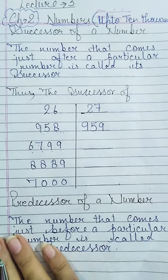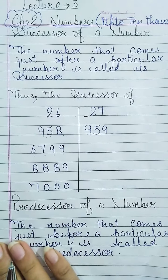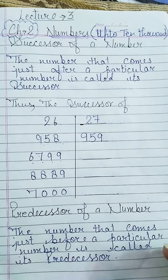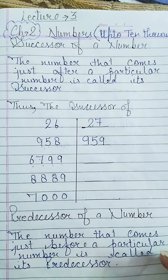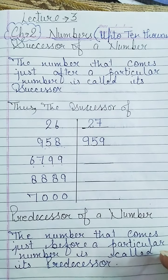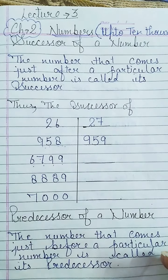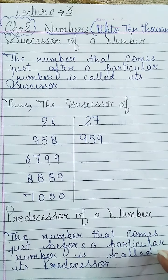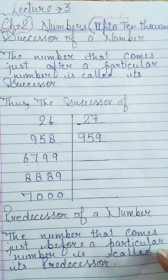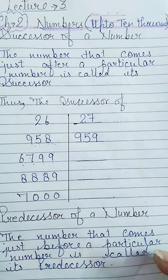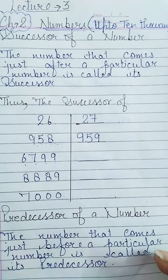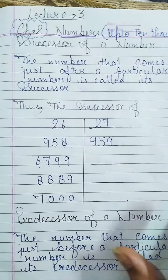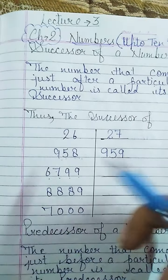First of all, I want to explain the successor of a number. What is the successor of a number? The number that comes just after a particular number is called the successor. So clearly we can say that the successor of a number is 1 more than a number. When we add 1 to any number, our successor will come.